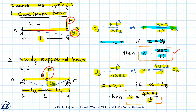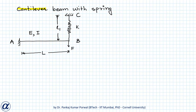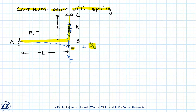Next, let's consider a system consisting of a cantilever beam with a spring. The spring is connected at the free end and there is a force F acting in the downward direction. Under this force, the system displaces downward and the displacement of free end B is yb. The extension in the spring is also equal to yb, so both the beam and spring have the same displacement.